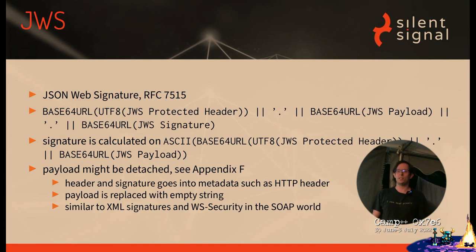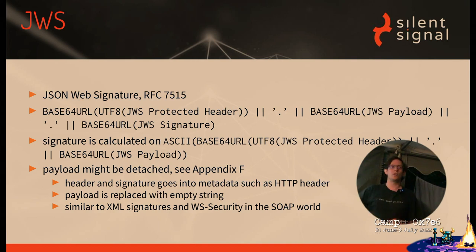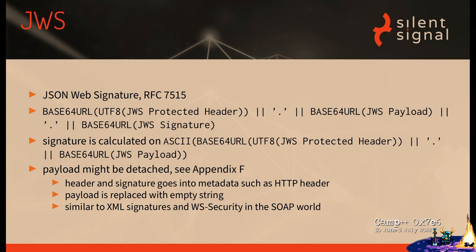So first of all, what is JWS? That's what the first RFC specifies — you have some kind of JSON that is signed, so it's like XML signatures only in yet another format. It basically comprises a so-called protected header, although we'll see how unprotected this is in reality. And then we have dots as a concatenation sign, then the payload itself, and then a signature, all separated by dots.